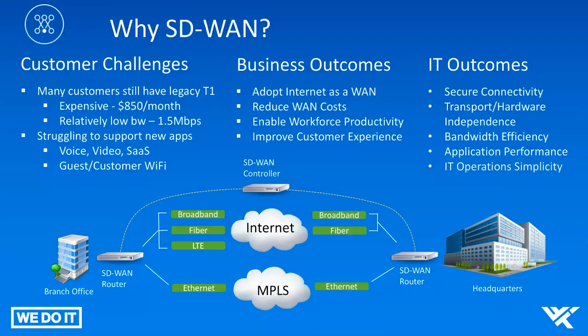For the entire business, by adopting internet as a WAN, organizations can help reduce their WAN costs — moving from expensive T1s and getting more bandwidth from local service providers. We also want to use SD-WAN to enable workforce productivity: ensuring that applications generating company revenue are working appropriately over the most optimum service provider. And finally, improving the customer experience — like ensuring guests in a healthcare setting joining the customer Wi-Fi have as good an experience as possible.